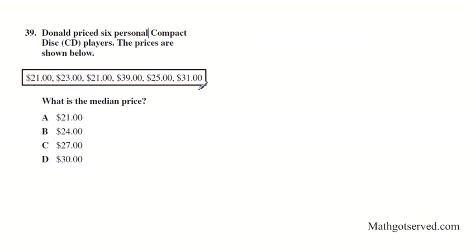For odd number of data sets, the median is simply the middle of the ordered set. So you just order the set and whatever is in the middle, that is your median.